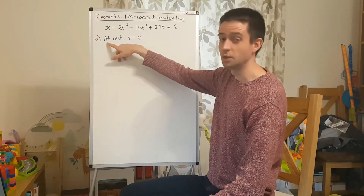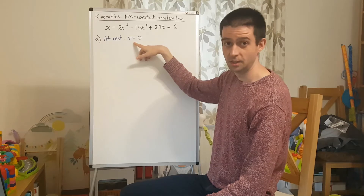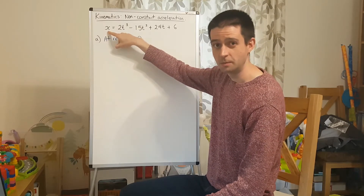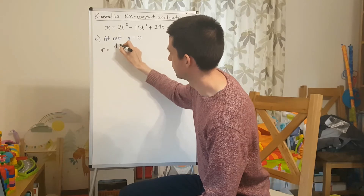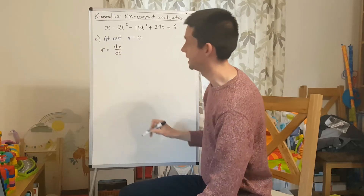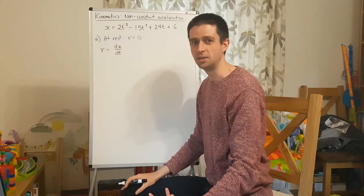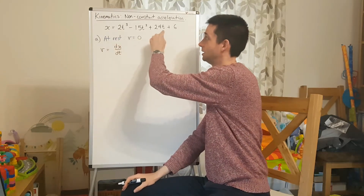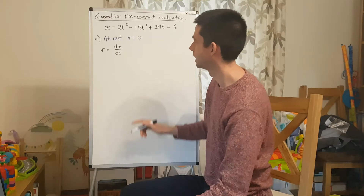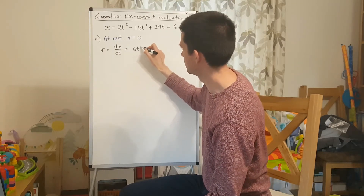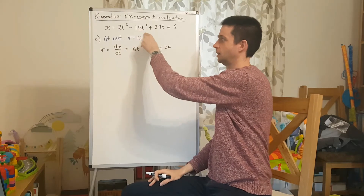Part A asks for the times at which the particle is at rest. If the particle is at rest, it's not moving, which means its velocity is zero. I have an expression for displacement, so to get velocity I need to differentiate. The expression for velocity is found by doing dx/dt — differentiating x with respect to t. It's really important that your notation is accurate: it's dx/dt, not dy/dx. When I differentiate, I get 6t squared minus 30t plus 24.